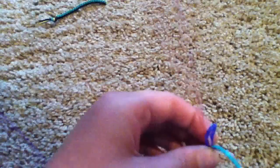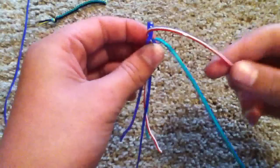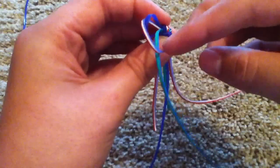Then you take the second string and take it over that loop and make a loop over the green.